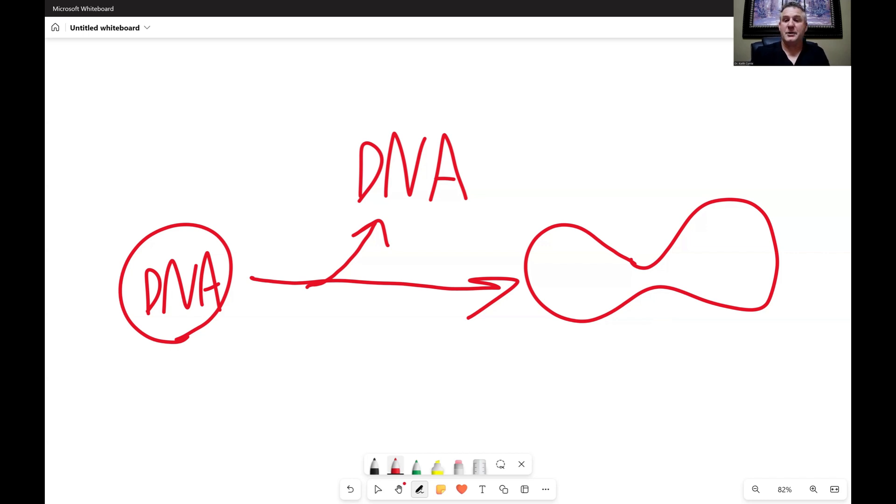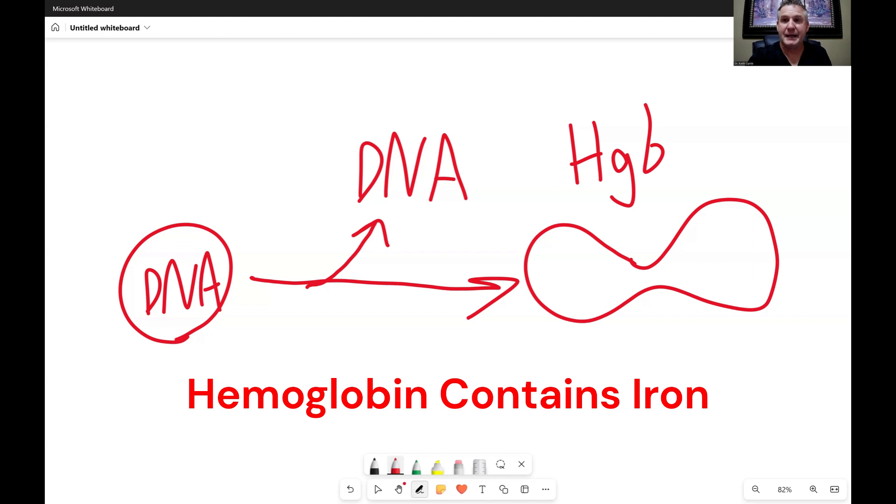Now the mature red blood cells, they're called anucleate, which means that they don't have a nucleus. They don't have DNA in there, but what they do have is what's called hemoglobin. Most diabetics are very familiar with the term hemoglobin A1C. The hemoglobin is the iron-containing molecule that is inside of the red blood cells, and it's specifically the hemoglobin that will bind to oxygen.